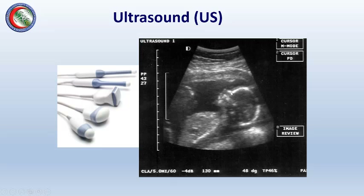This is a very common ultrasound image showing a baby's head and profile — we can see the nose, mouth, neck, chest, and heart. Different transducers are used according to application: a large transducer for the abdomen, a transvaginal probe for the female genital system, and smaller transducers for smaller parts like the thyroid or testis.